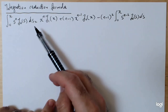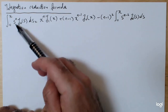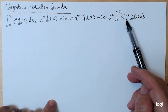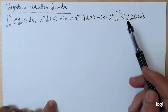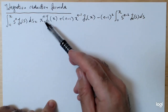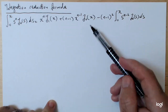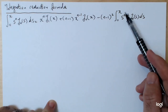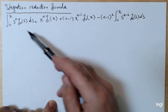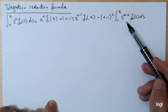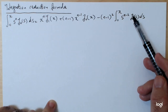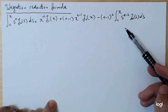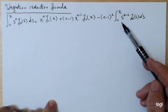I call it the reduction formula because if you look carefully, you start with s to the n times j naught, and the formula gives you an equality in terms of an integral of a lower power of s. Specifically, the integral equals x to the n j₁ plus (n−1) x to the n−1 j₀ minus (n−1)² times the integral from 0 to x of s to the n−2 j₀. So you start with s to the n and end up with the same type of integral in terms of s to the n−2.